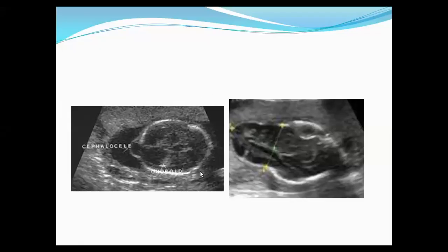This is the ultrasonographic picture of a defect in the skull in the occipital region, diagnosed as encephalocele. This is an image of the more obvious lesion of a large defect in the skull bone, also representing encephalocele.